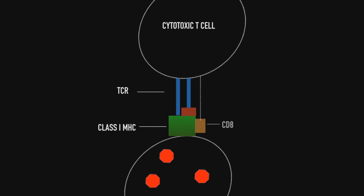In order for this to happen we need something else, and this is where our CD8 glycoprotein comes along. CD8 accompanies the TCR and helps to bind to the Class 1 MHC molecules. When this occurs, we activate our cytotoxic T-cell, and in doing so we trigger two actions.